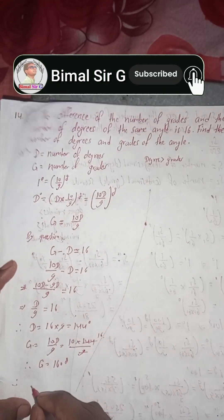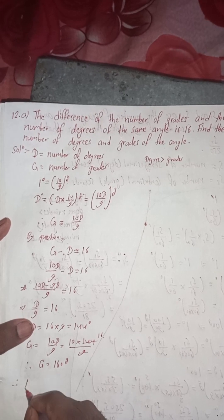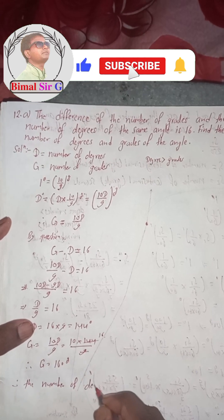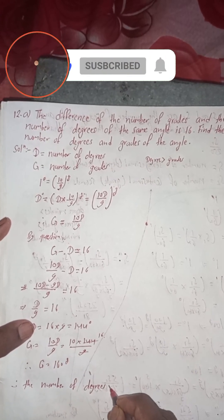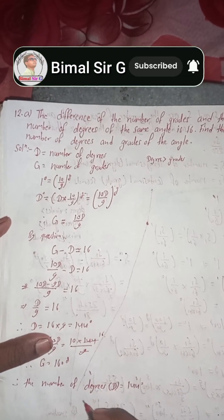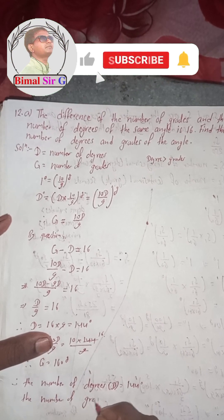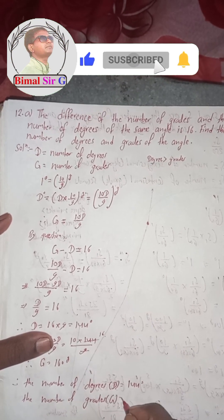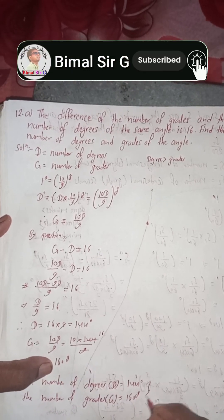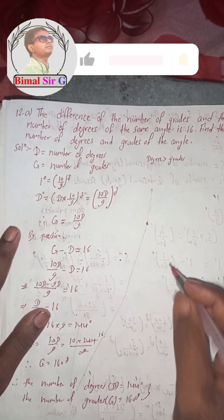Therefore the number of degrees D is equal to 144 degrees, and the number of grades G is equal to 160 grades. This is our required solution.